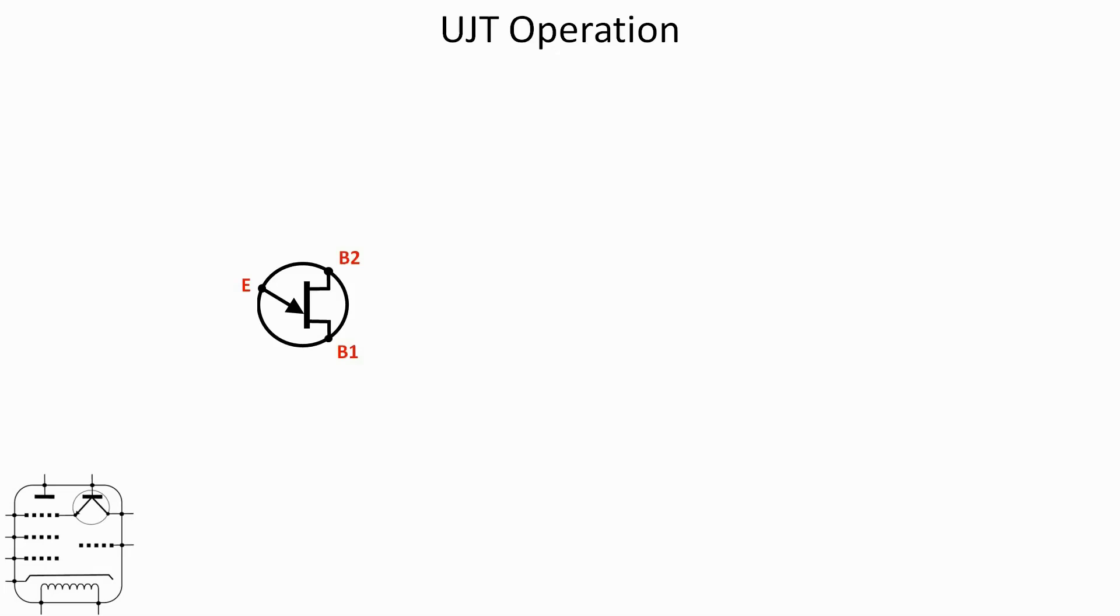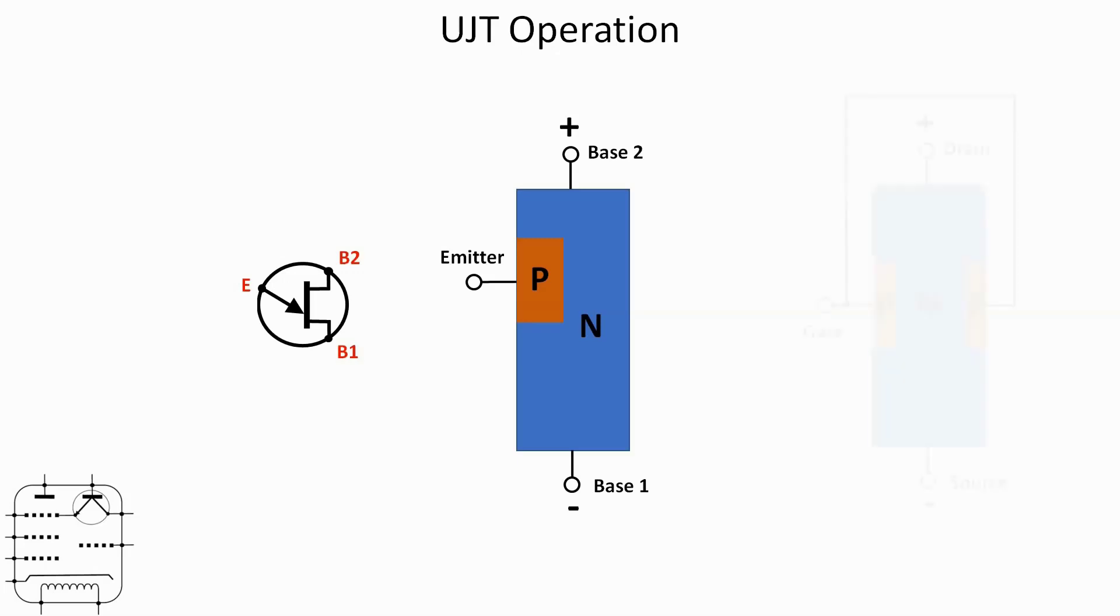We've got three connections: emitter, base one, and base two. Construction usually is a piece of n-type material with base one and base two at the bottom and the top of that. Inlaid into that is some p-type material which is the emitter connection.